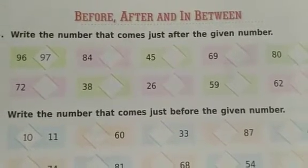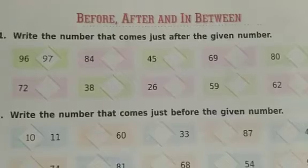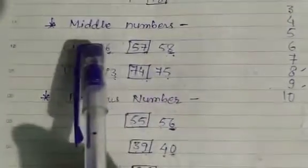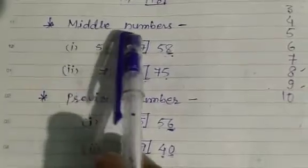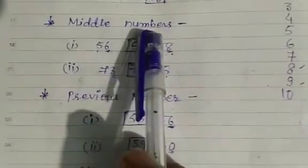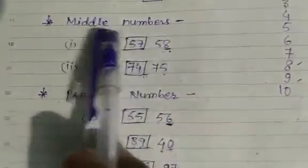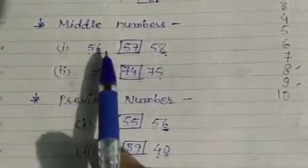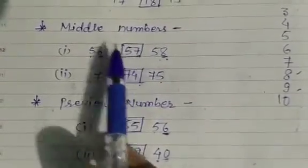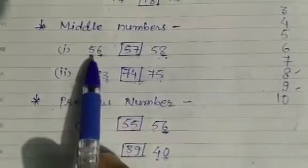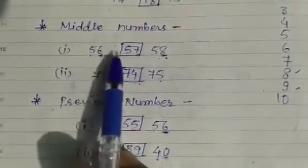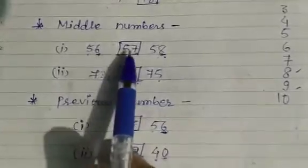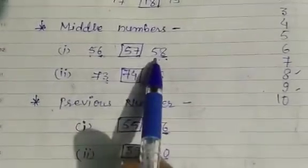To understand, look in the copy. The first heading is 'Middle Number' — that means between. I am giving the example: 56, a box, and 58. We need to find the number between 56 and 58. We compare the right-side digits: here the right side is 6, and here is 8.